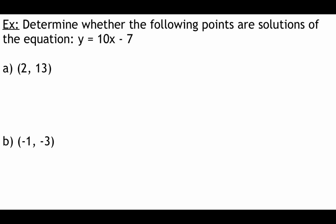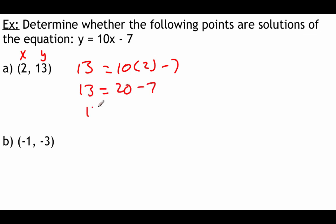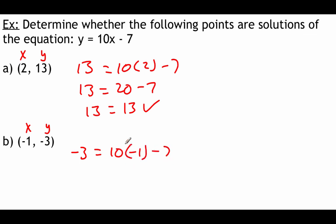Go ahead and pause the video and try this one out on your own. You're given the equation y equals 10x minus 7. Plugging in x equals 2 and y equals 13: 13 equals 10 times 2 minus 7, so 13 equals 20 minus 7, which is 13 equals 13 — that one works. Checking the next point with x equals negative 1 and y equals negative 3: negative 3 equals 10 times negative 1 minus 7, giving negative 3 equals negative 10 minus 7, which is negative 17. That one does not work.